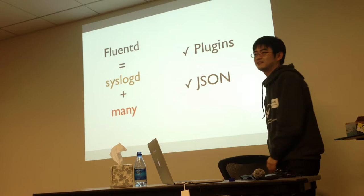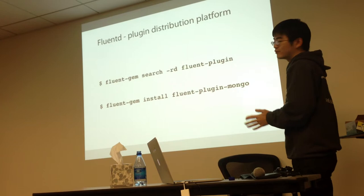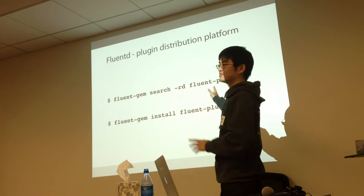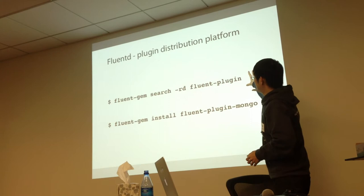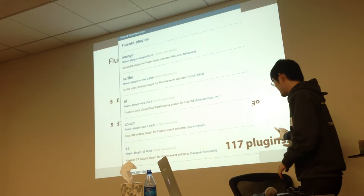So Fluentd is SysRuby plus many features, including plugins and JSON. There are already many plugins released, and you can use RubyGems to search and install plugins. This command lists all plugins released on RubyGems, and you can install any plugins using the RubyGems command. Currently, there are 170 plugins released.